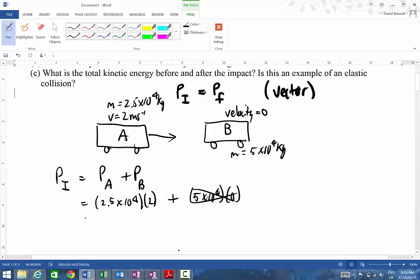So the initial momentum is simply going to be momentum of A, so that's going to be 5 by 10 to the 4 newtons, and that's to the right. We basically need a direction associated with it. The way I've drawn it it's moving to the right.